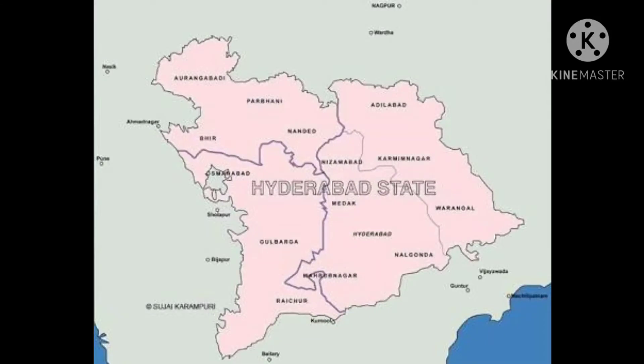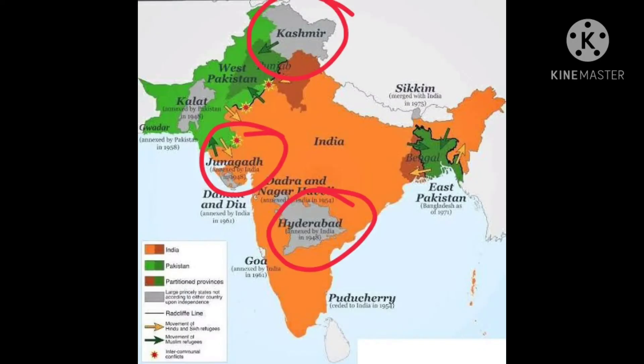Hyderabad was also one of the princely states that were never ready to merge with India. But finally, Hyderabad was also merged with our Indian Union. The person who was behind all these mergings of princely states was Sardar Vallabha Patel, the Iron Man of India. By the end of 1947, the task of integrating the princely states to the Indian Union was completed.